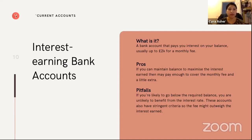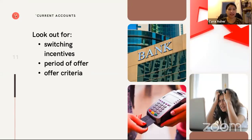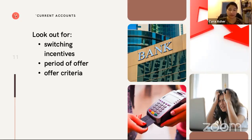Some extra things to consider. Switching incentives: a lot of banks at the moment — First Direct, HSBC, Barclays, and Lloyds — offer switching incentives where if you switch your current account to theirs, they'll give you £150 or £100 or M&S vouchers. Don't get drawn into that if you have a student account, because you can't switch student accounts — as soon as you start a switching service, you can't stop it and you lose your student account, meaning you lose that fee-free overdraft and end up paying a lot of interest.